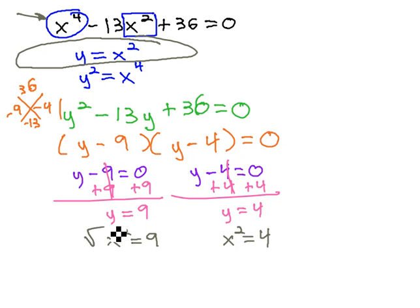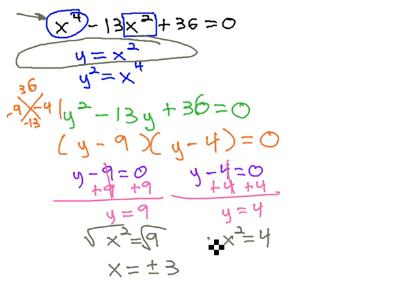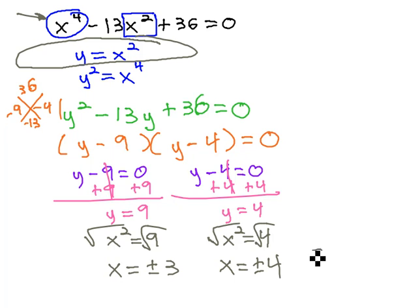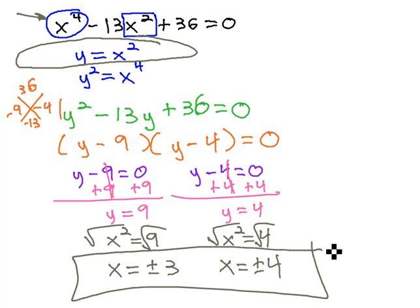We can solve both of these equations for x. Simply done, we take the square root of both sides. Remember with square roots, we have plus or minus — so x equals plus or minus 3. Taking the square root of both sides of the other equation, x also equals plus or minus 2. Our solutions to this equation are x equals 3, negative 3, 2, and negative 2.